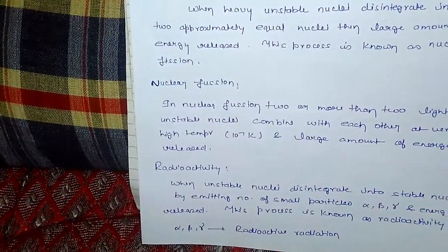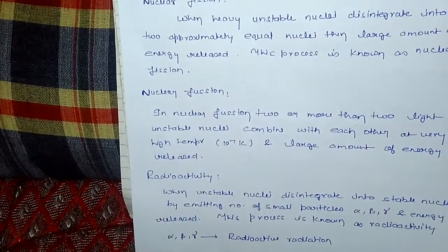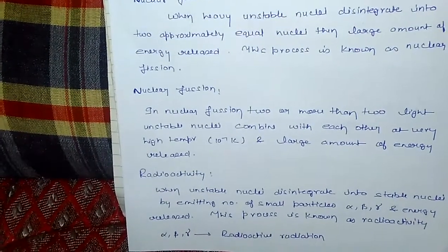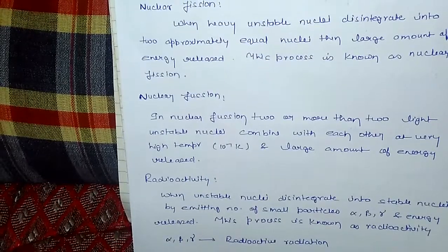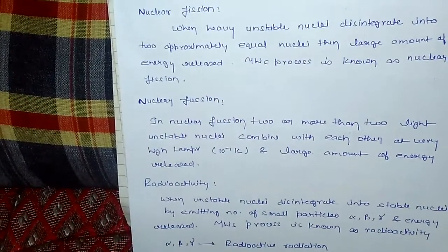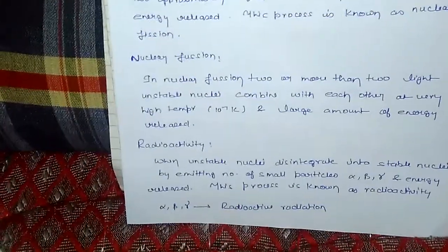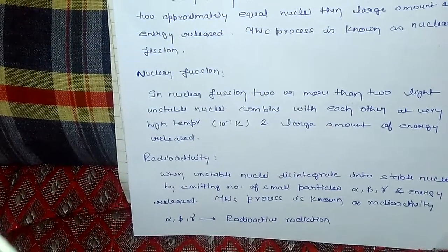Radioactivity: When unstable nuclei disintegrate into stable nuclei by emitting small particles—alpha, beta, gamma—and energy released, this process is known as radioactivity. Alpha, beta, gamma are radioactive radiations.